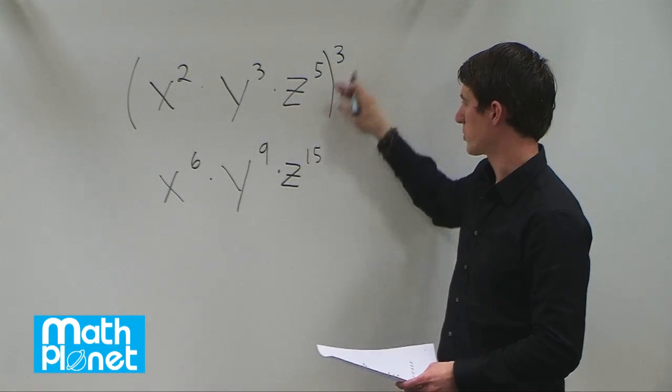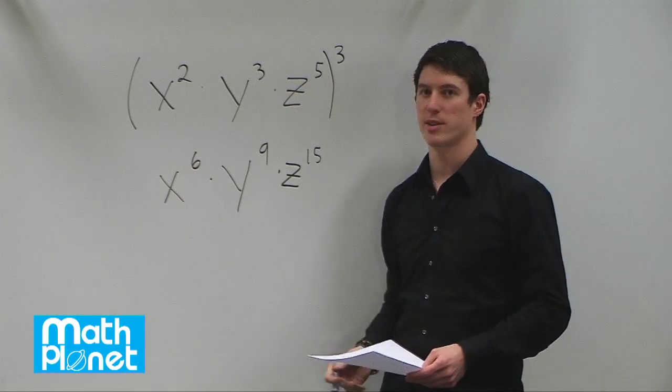So this is simply just written as this where we have multiplied each of the indices by this higher order here, 3.